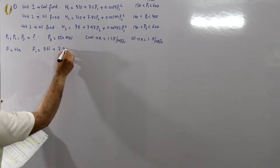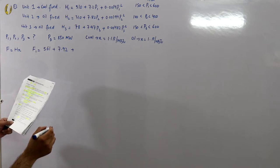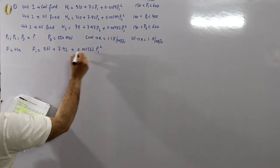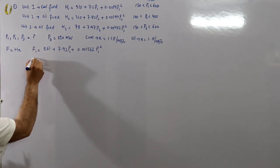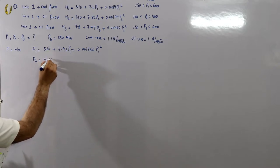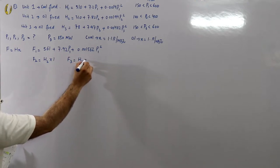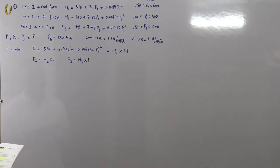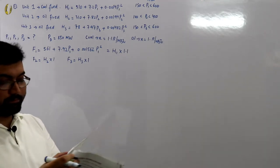For f1, this is coal-fired so multiply with 1.1: f1 = 561 + 7.92·p1 + 0.001562·p1². For f2 and f3, since x = 1 for oil, f2 = h2 and f3 = h3 unchanged. This is step number 0 — converting h into f.